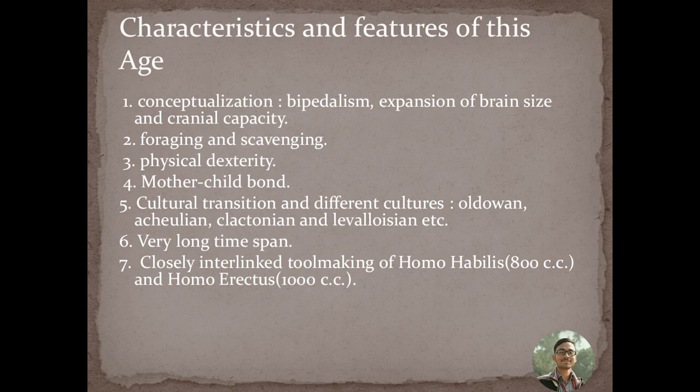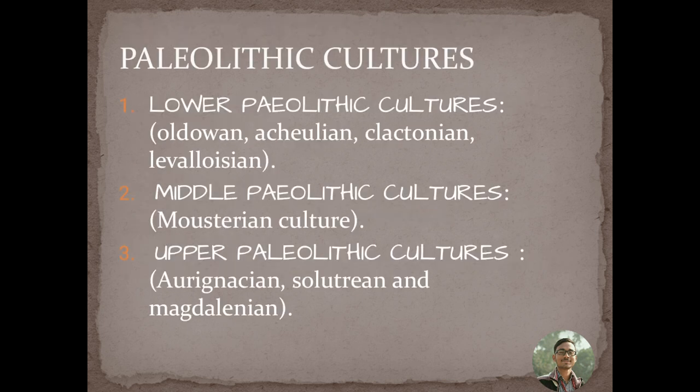In Lower Paleolithic cultures we have Oldowan, Acheulian, Clactonian, and Levallois. In the Middle Paleolithic cultures the most prominent is the Mousterian culture. Then in Upper Paleolithic cultures we have Aurignacian, Solutrian, and Magdalenian cultures. Mother-child bond and physical dexterity are also very important concepts of this age.